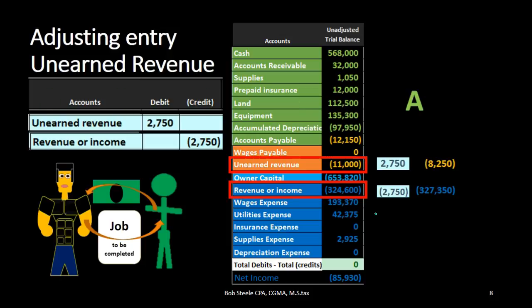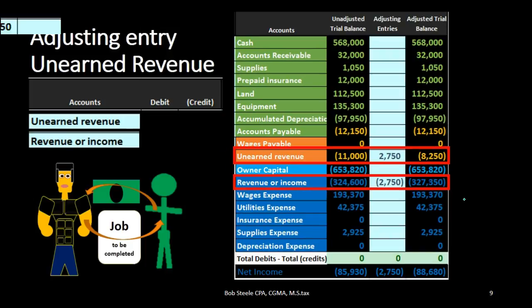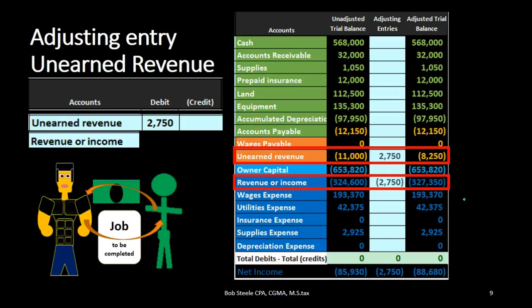On our accounting equation, assets remain the same. We see that liabilities have decreased and equity has increased. Why has equity increased? Because revenue increased. Revenue minus expenses is net income, therefore net income increased, and that is part of the equity section, which has also increased.